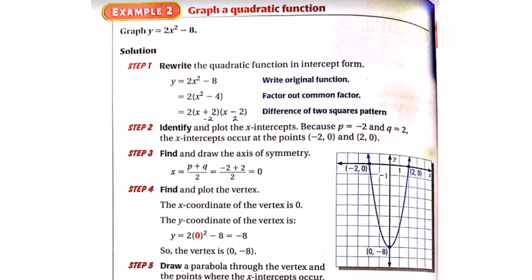In our next example, we want to factor it, and we want to get it into a point where it is written in intercept form. Right away you can see that there's an x squared term and a constant. There is no b. b is equal to 0, so there is no x term.